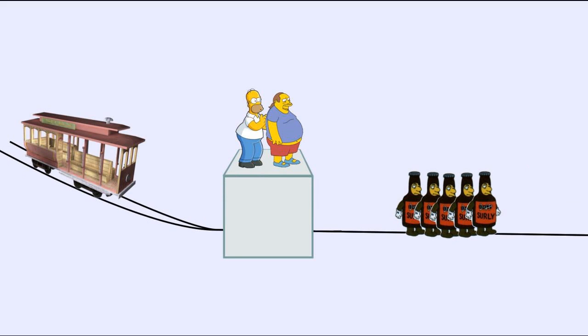Scenario number two: the trolley is again headed for the five people. There is no switch, but instead there is a fat man standing on a bridge above the track. He has enough bulk to stop the trolley if he were to fall onto the track. Now the question is, would you push him off the bridge if you had the chance to do so?